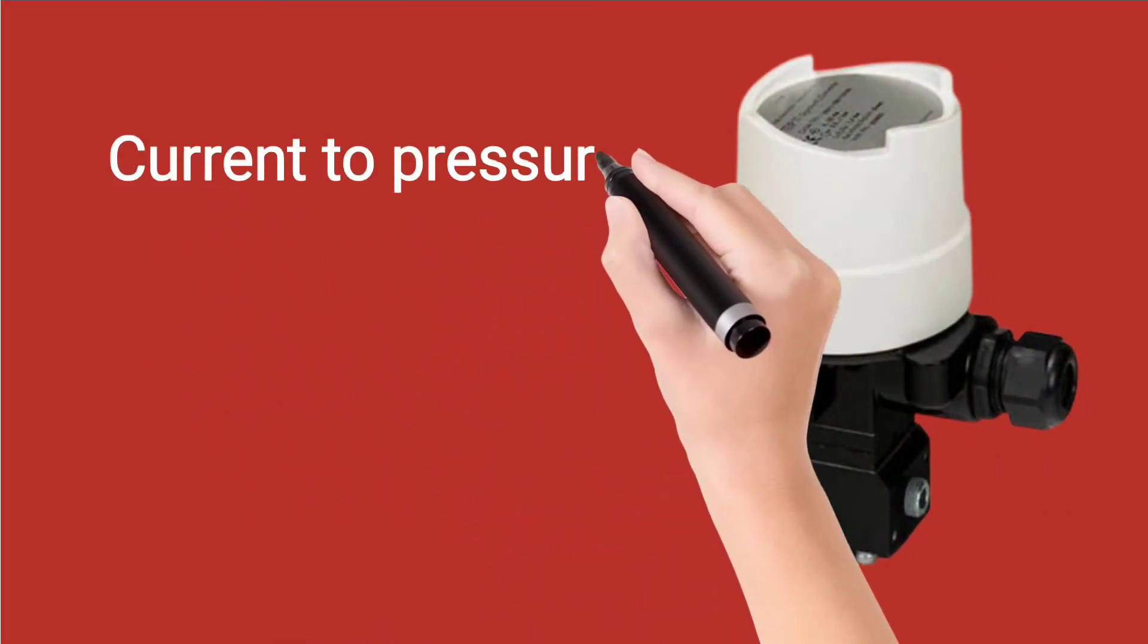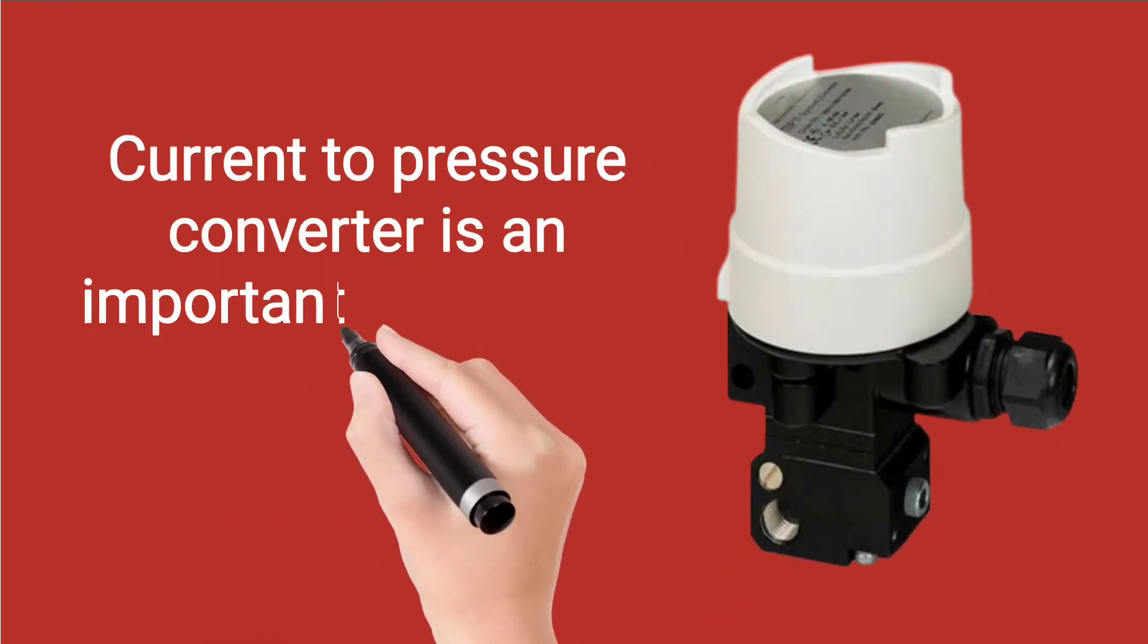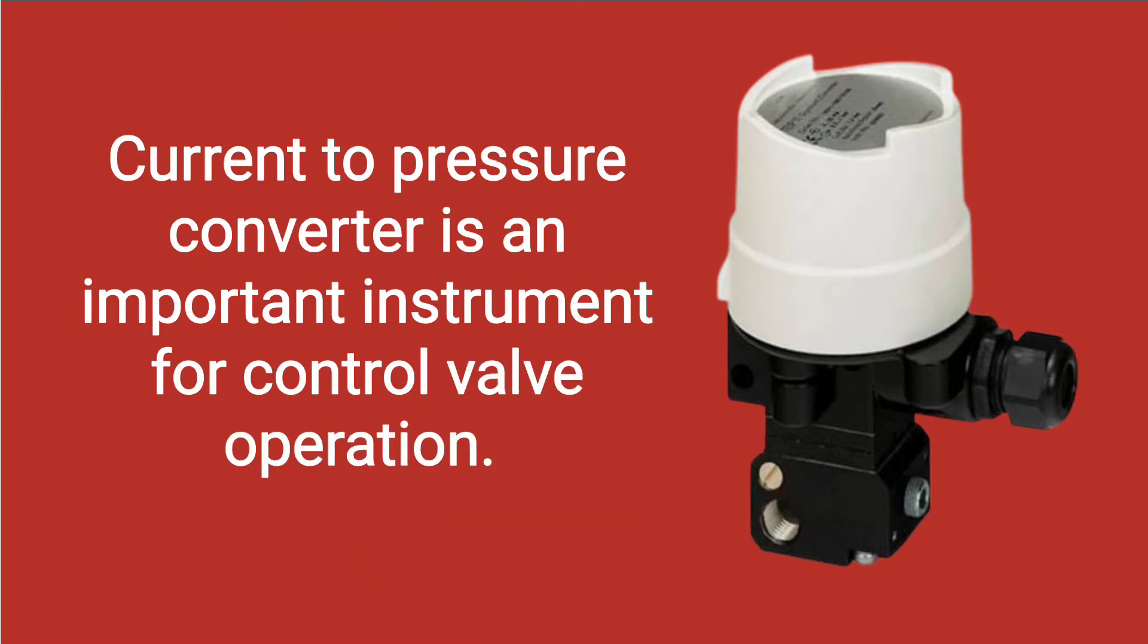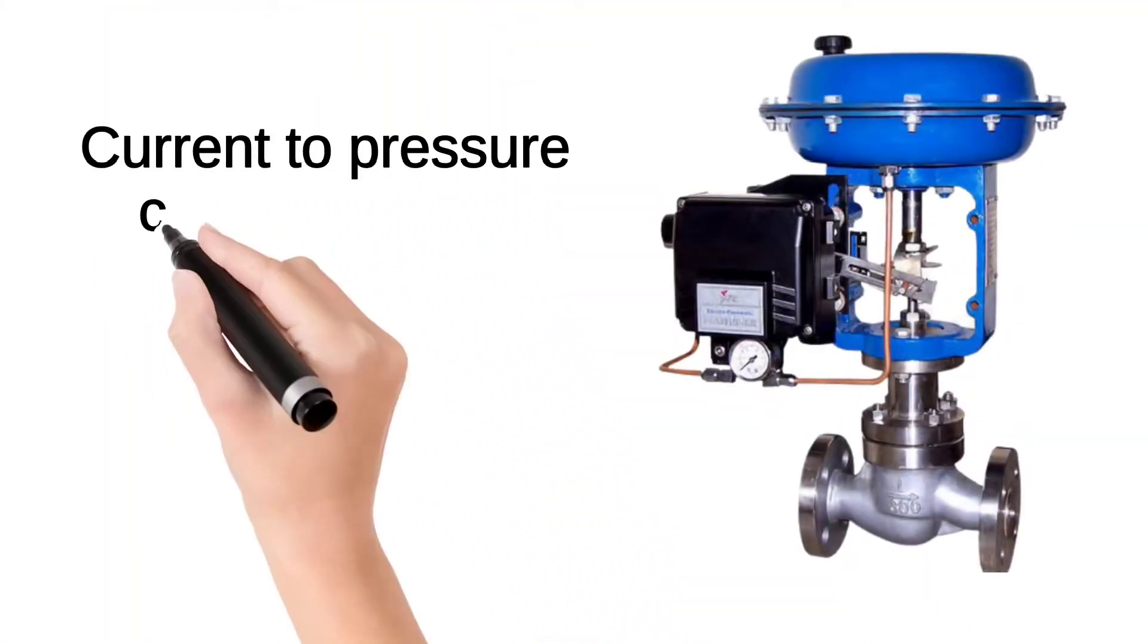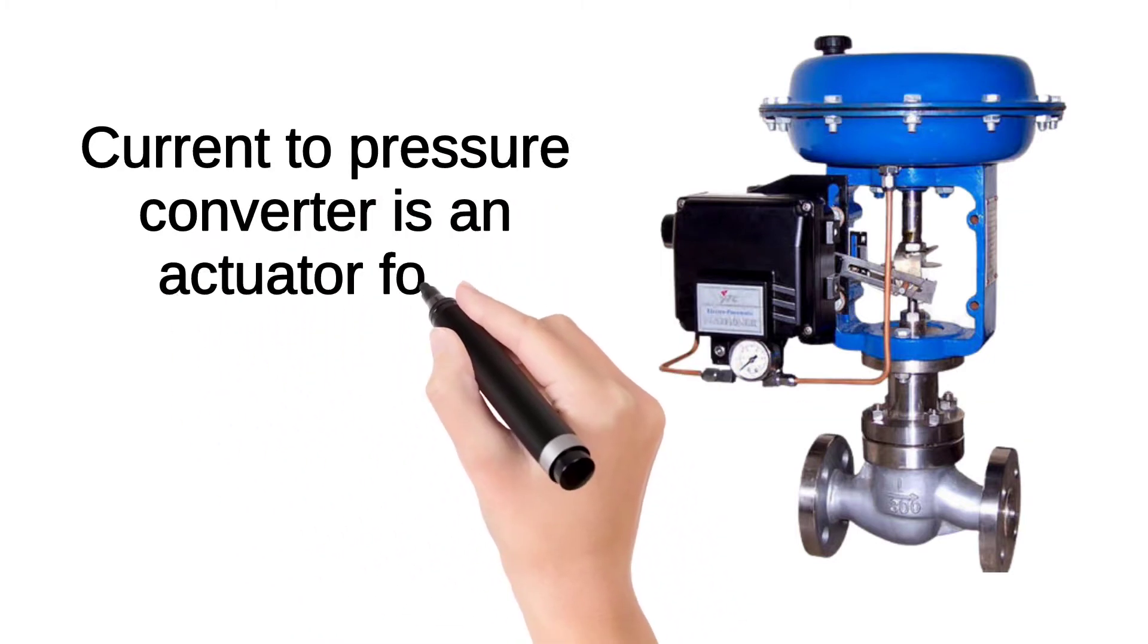Current to pressure converter is an important instrument for pneumatic control valve operation and it works as an actuator for a pneumatic control valve.